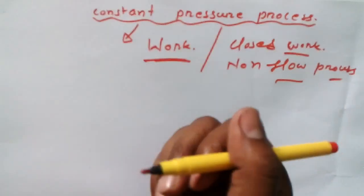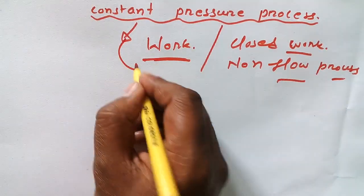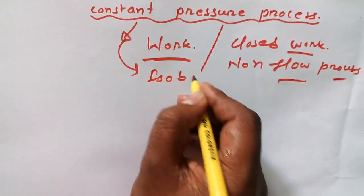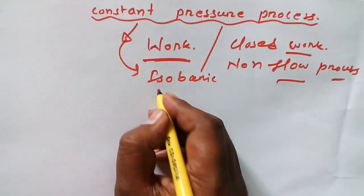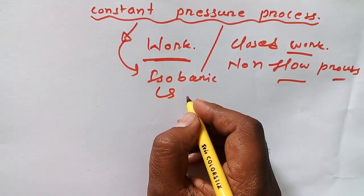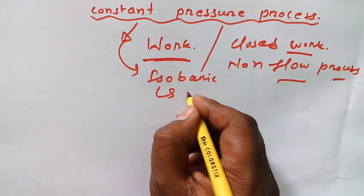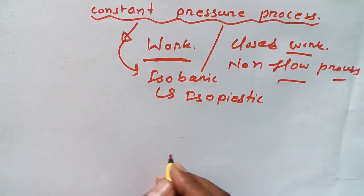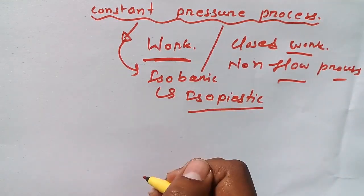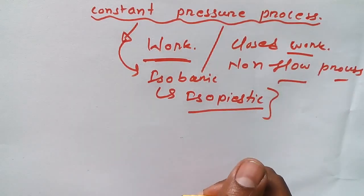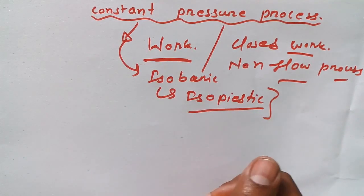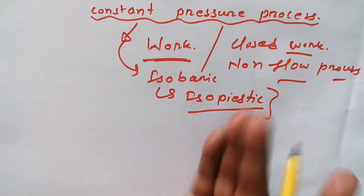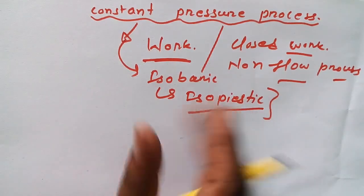Now, the constant pressure process has other names. The most important and most common name is the isobaric process. Another name — and I'm sure you haven't heard about this one — is the isopiestic process. If you have heard of it, well done!